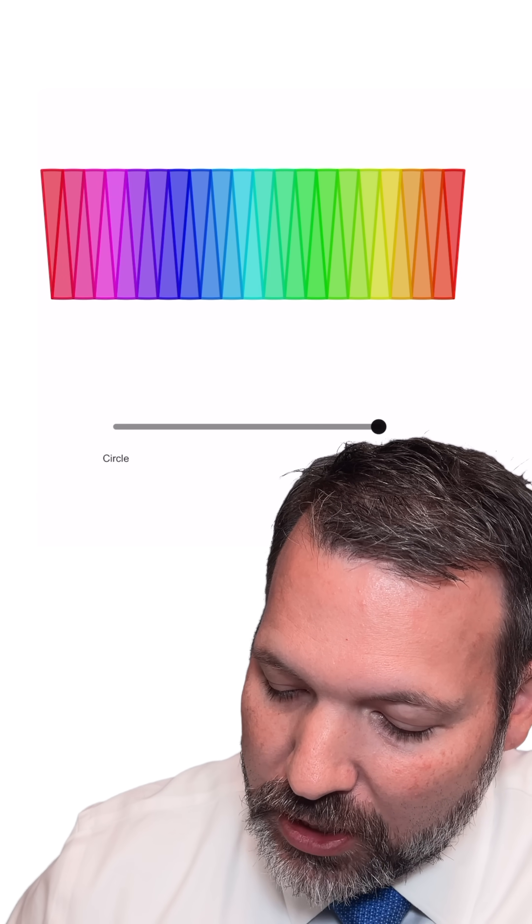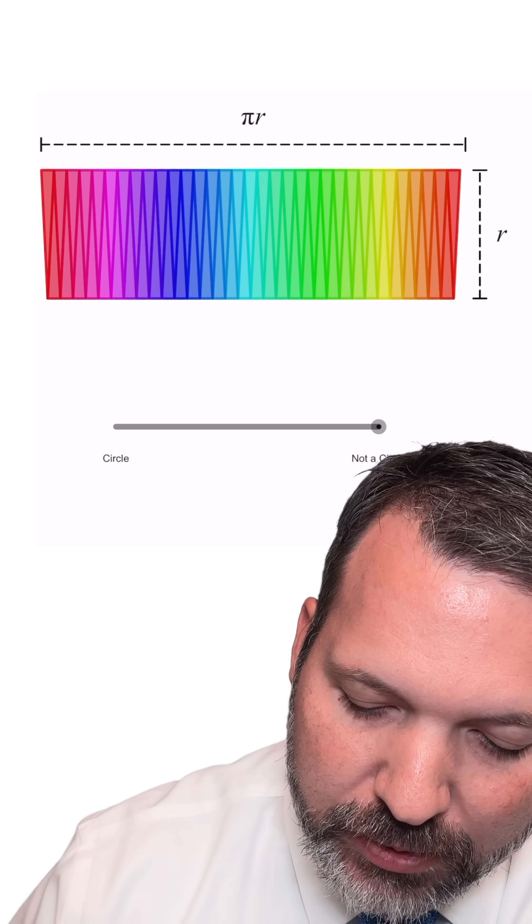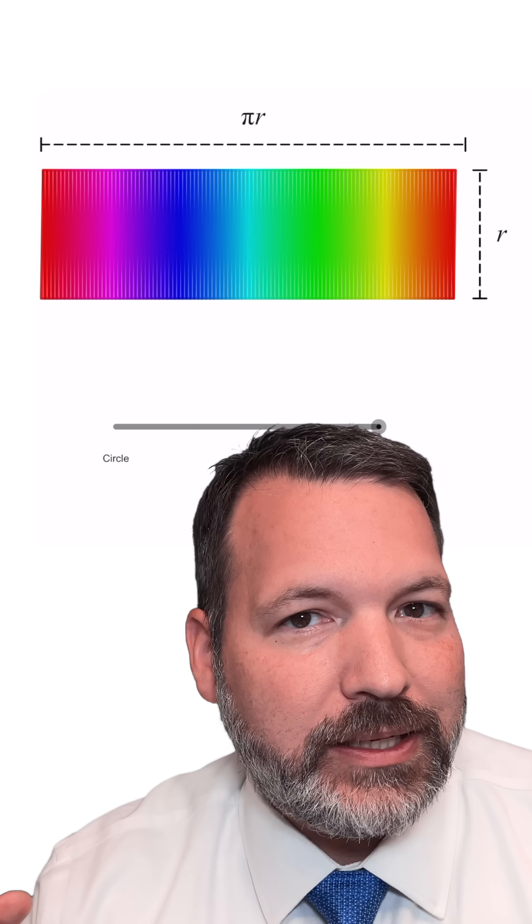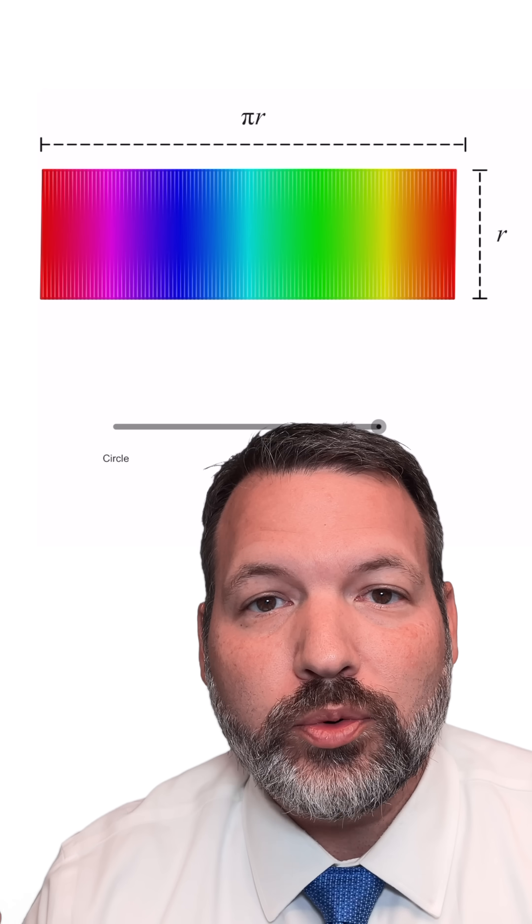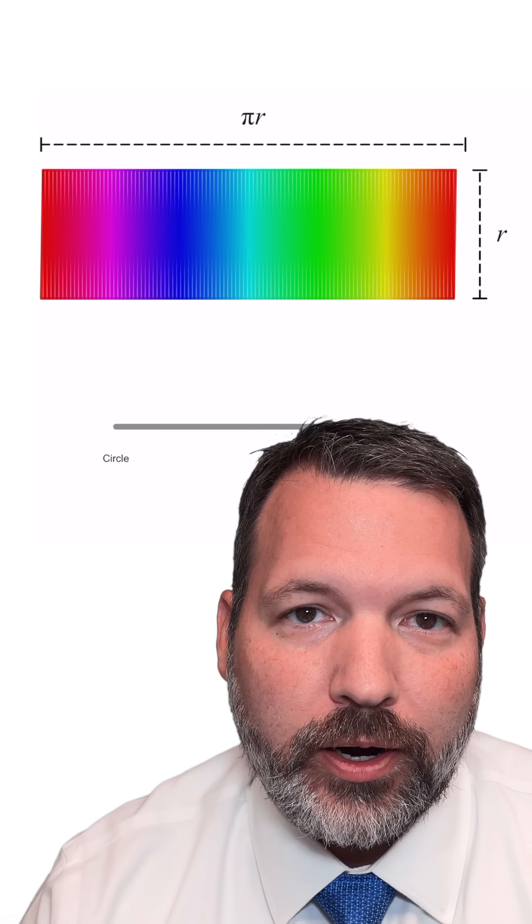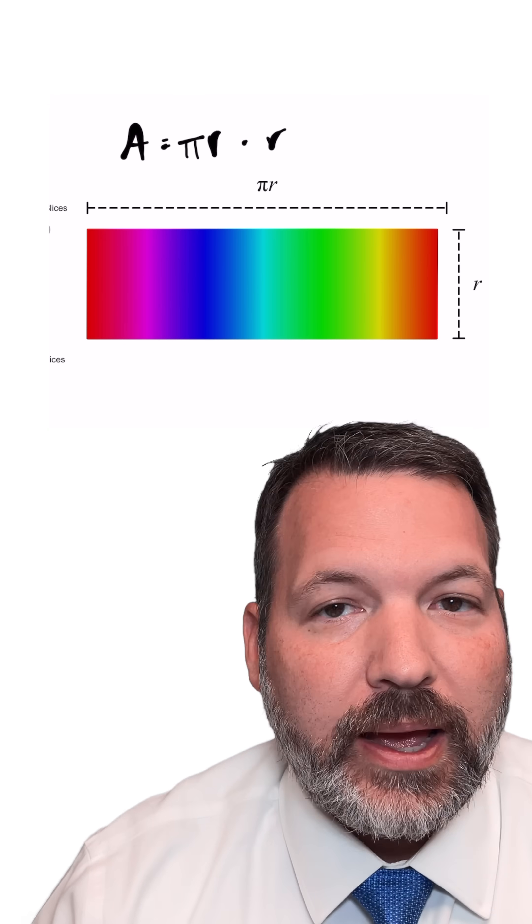The more and more wedges we use for the original circle, the more and more rectangular this particular shape gets. Until when you take this to the limit, you can see that it's basically a true rectangle with a height of r and a base of pi r. Of course, when we multiply that together, pi r the base times r the height, we get a total area of pi r squared.